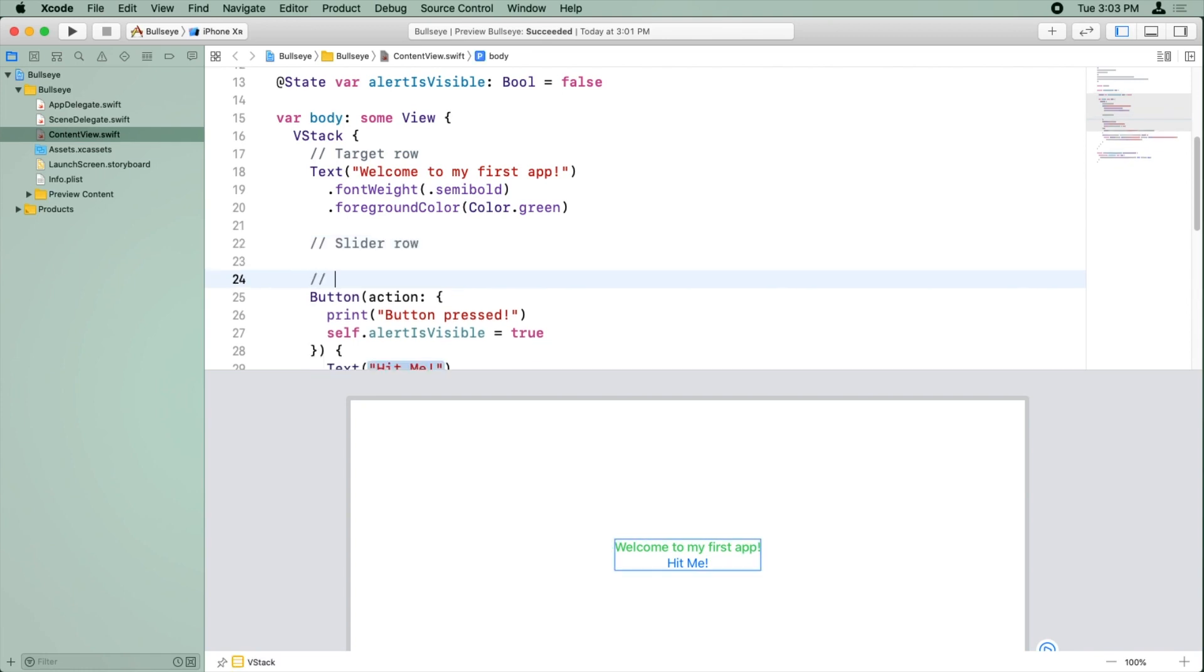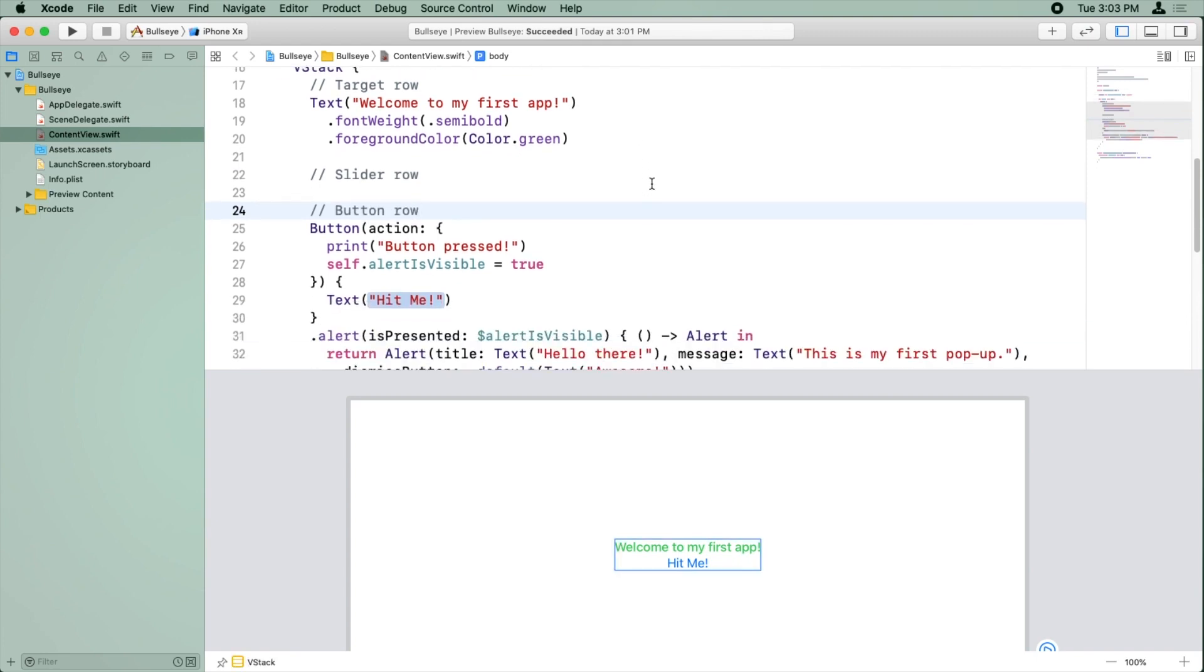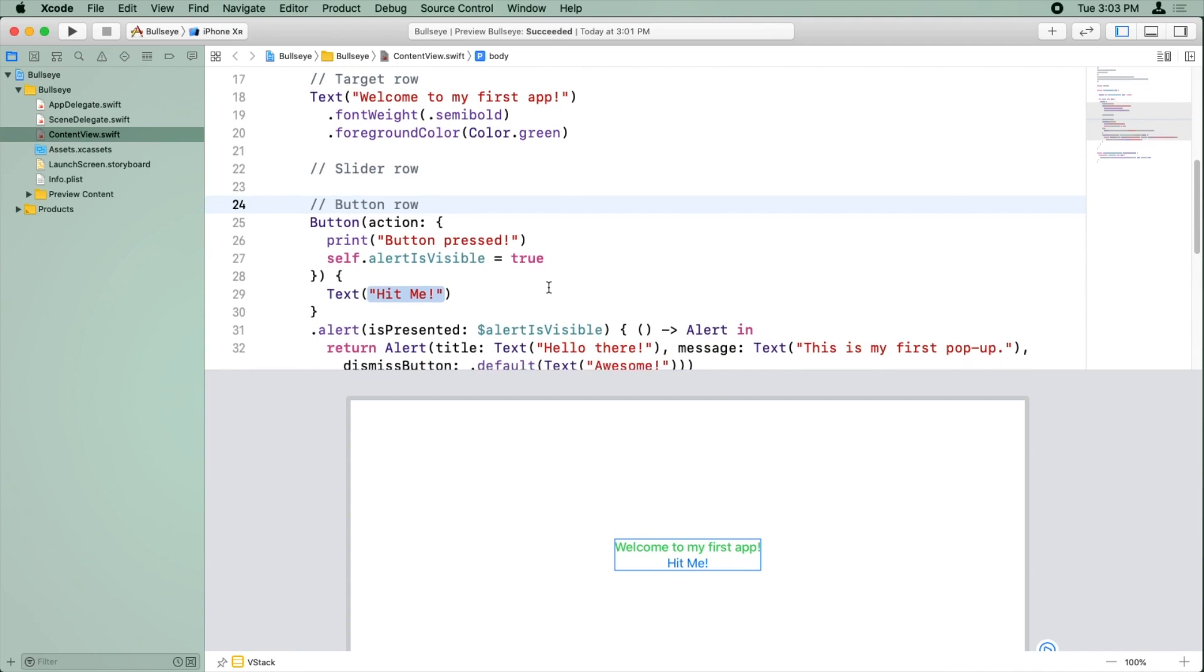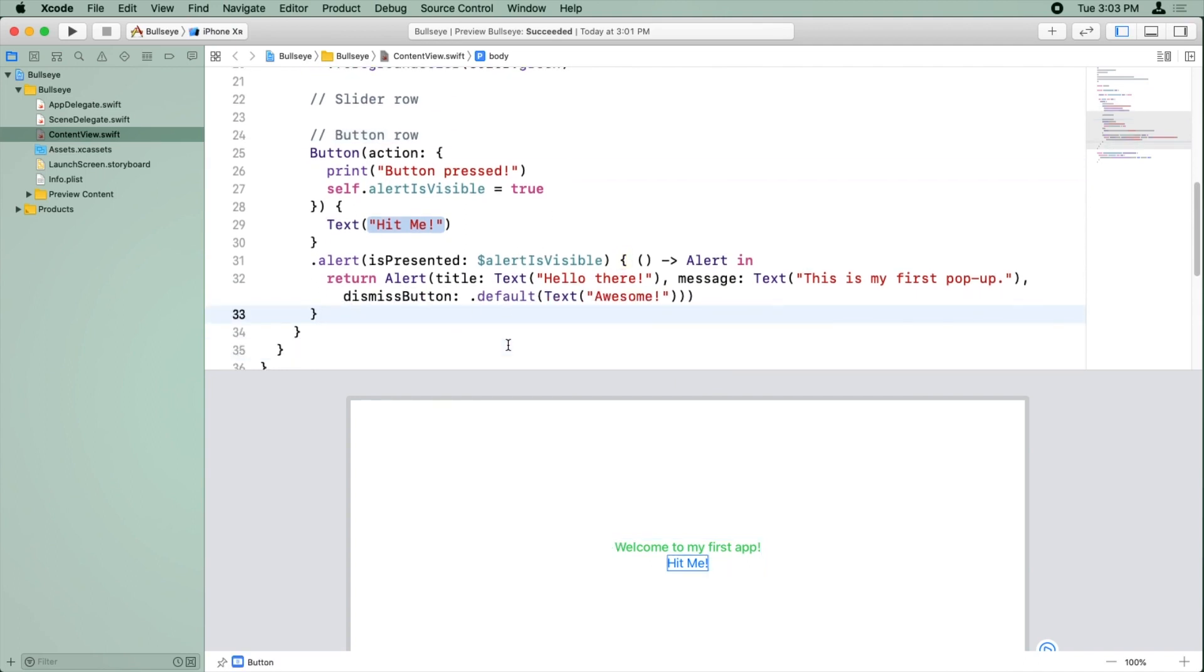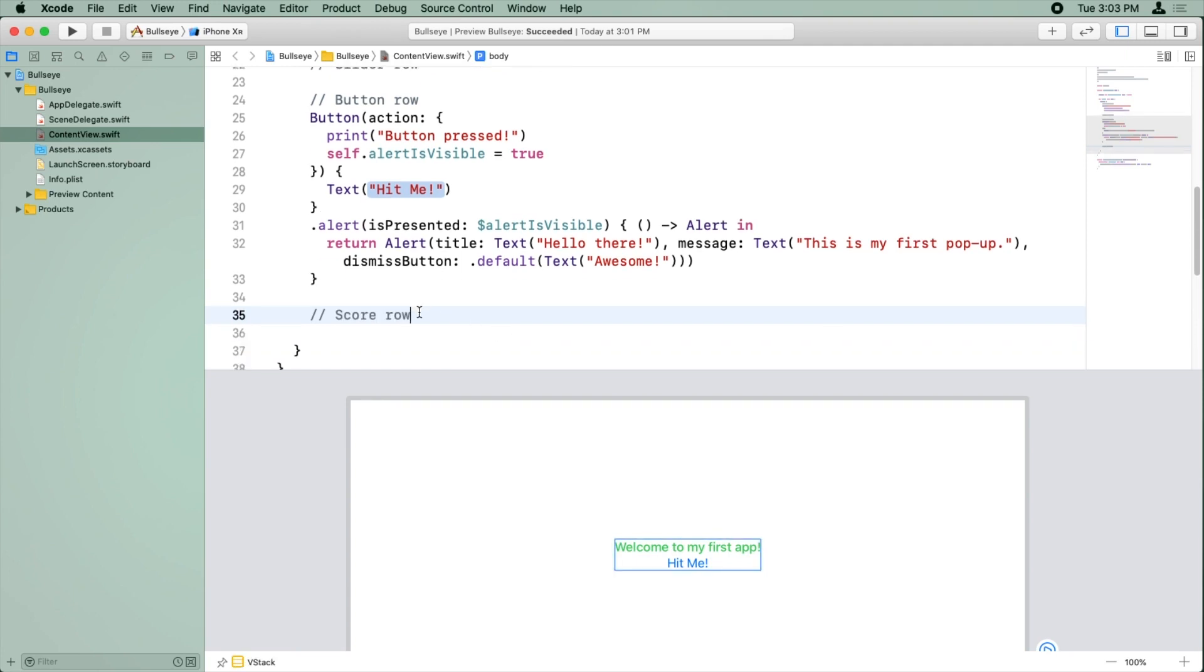And then we want the hit me button. So this is the row that has, we'll call it the button row, the one that has the hit me button. And what happens after the button row with the hit me button? Well, we have all the score information, like that's where the start over button will go. That's where the total score will go, the round number and the info button. So we'll just call that score row and put a comment here.